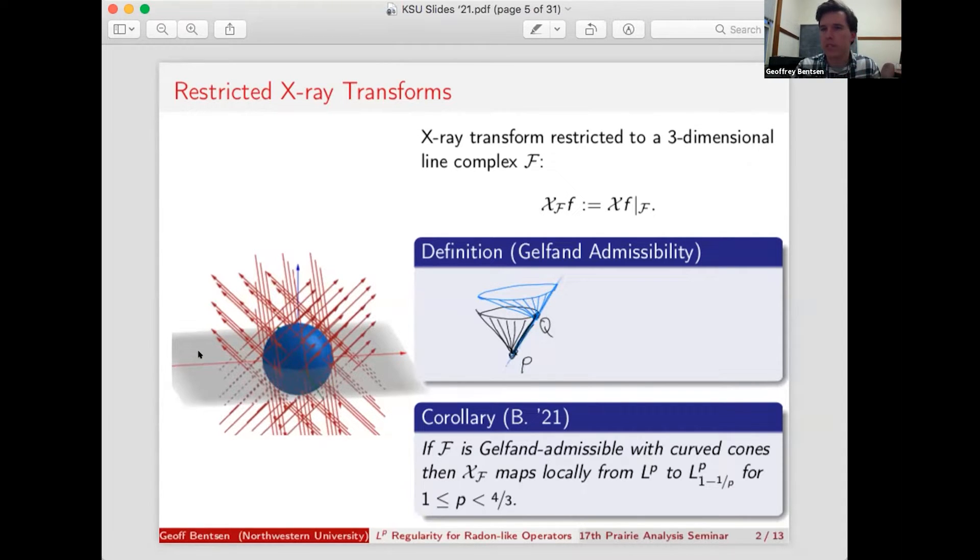Now, for the rest of this talk, I'm going to be talking about large values of P, not small values of P, but you can do that just by taking the adjoint of this operator. The adjoint of x-ray transform maps LP to LP 1 over P for large values of P.